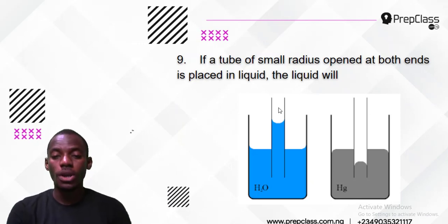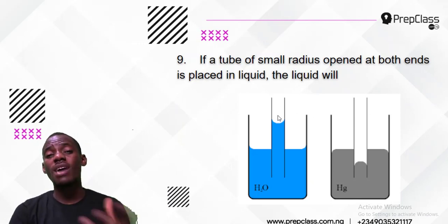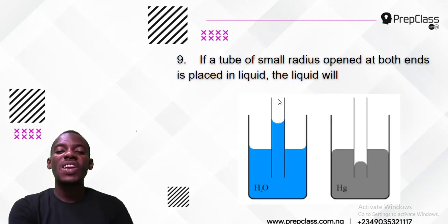The answer is very simple. If you put a straw, that is a capillary tube - this is a question on capillarity. If you put a straw in liquid, here is water and here is mercury. Water wets glass, therefore the water in the straw will rise.